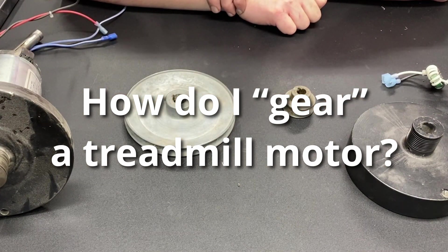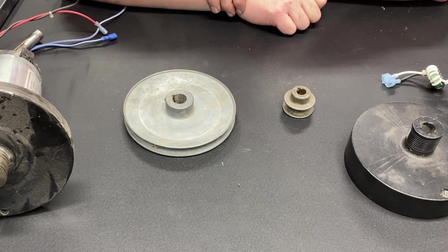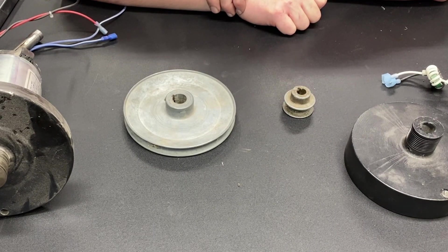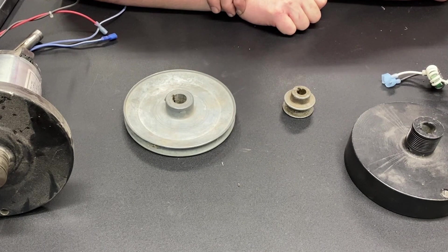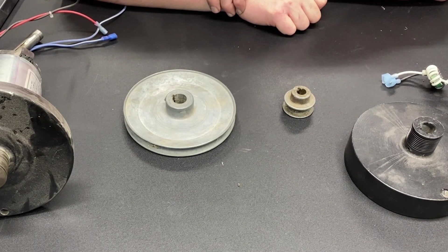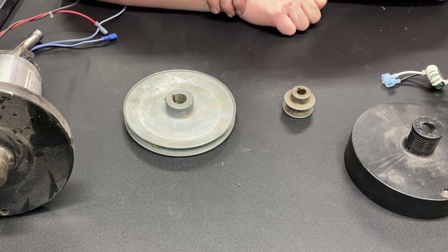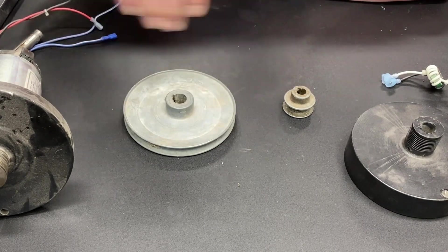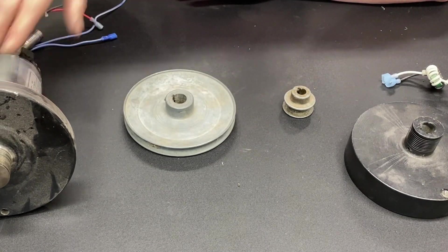To put it simply, gearing turns RPMs into torque. So let's say that you have a motor that is rated at one foot-pound of torque and it goes up to 6,000 RPMs. That's roughly where this motor comes in at.